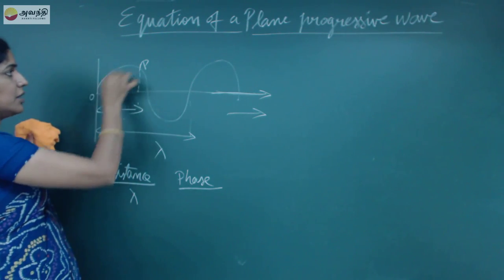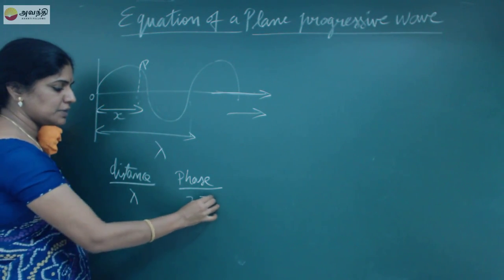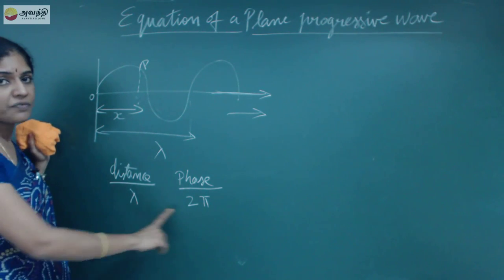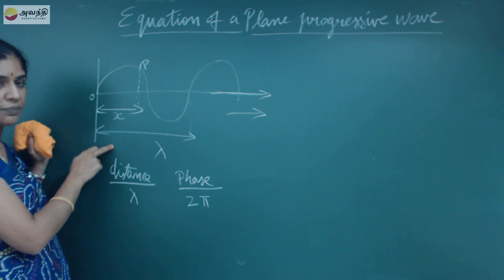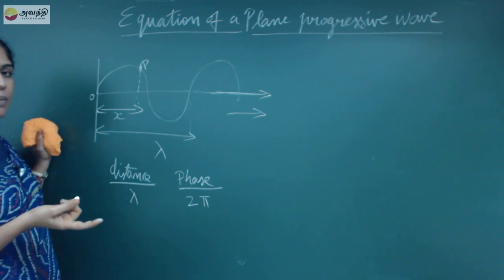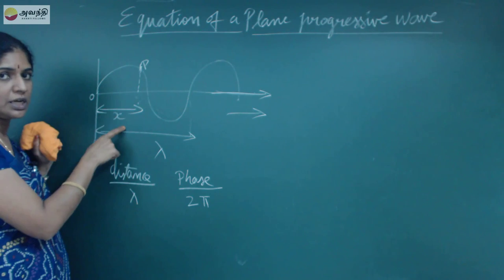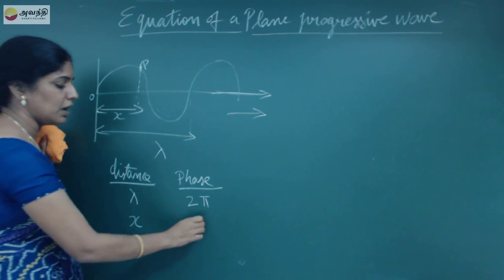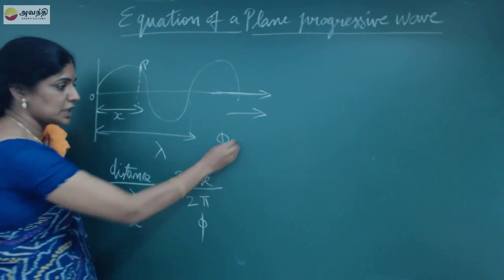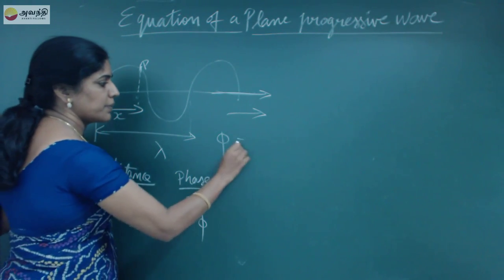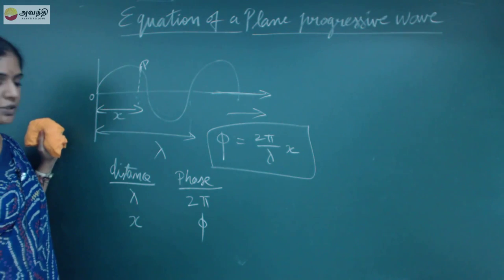One wavelength covers 90, 180, 360 degrees — or in terms of radians, 2π. So one wavelength corresponds to a phase of 2π. Within the wavelength, the particle vibrates at any instant of time. The position of point P is at a distance x from the origin. The phase φ is given by the phase-distance relationship: φ = (2π / λ) × x. This is a very important formula.